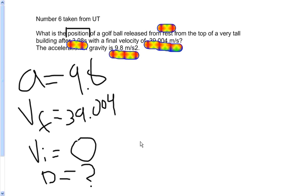Now we need to pick one of the big three. You would pick final velocity squared equals initial velocity squared plus 2 times acceleration times distance. Okay, so let's plug it in.